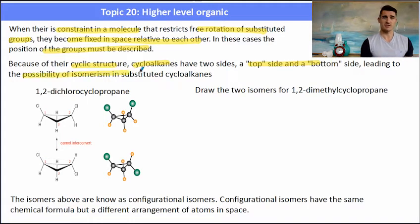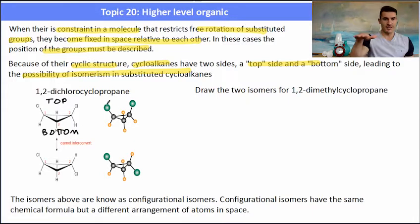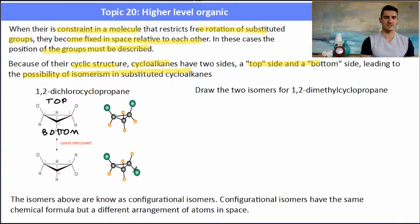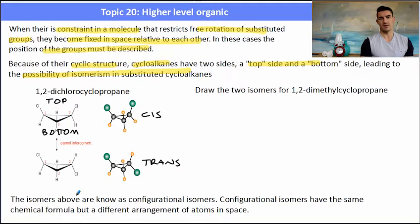Because of their cyclic structure, cycloalkanes have a top side and a bottom side, which leads to the possibility of stereoisomers. Here we have 1,2-dichlorocyclopropane — it has a top and a bottom, with the plane in between. We can see that the chlorines are both at the top in the first example, and in the second example there is one at the top and one at the bottom. If they're both on the same side — both at the top — we describe that as the cis isomer. If there's one at the top and one at the bottom, that's the trans isomer.